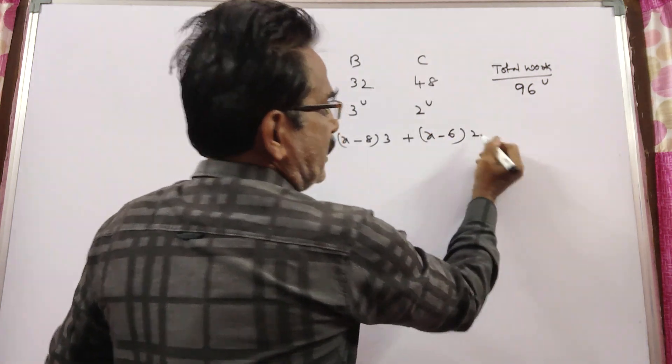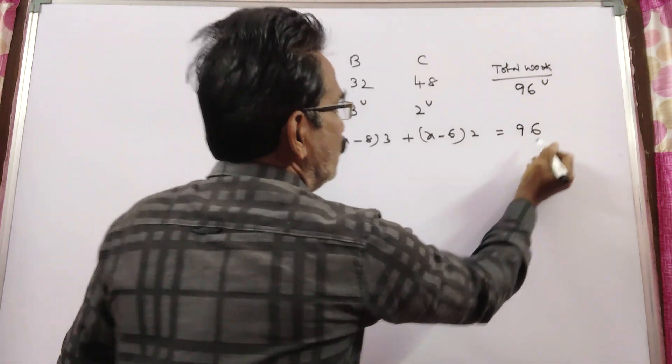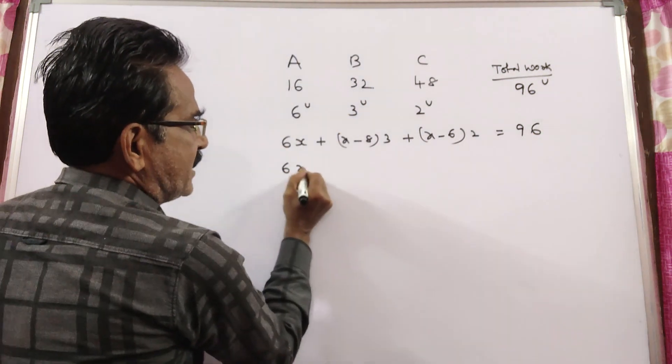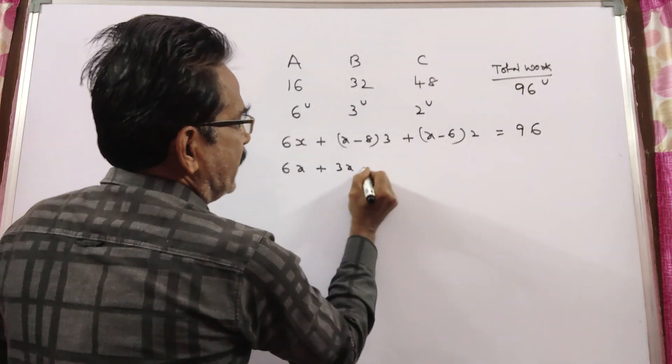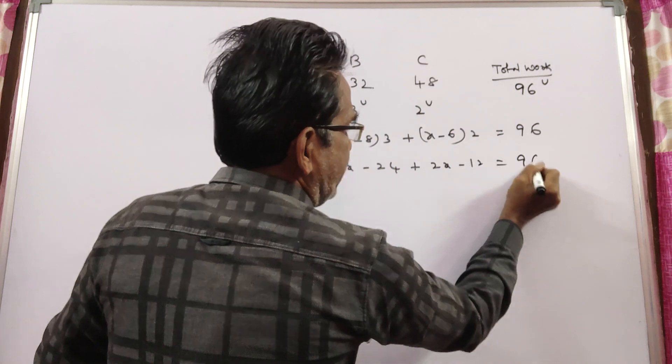In X minus 6 days, C can do X minus 6 into 2. So, now the total, this is equal to total work. Friends, 6X plus 3X minus 24 plus 2X minus 12 is equal to 96.